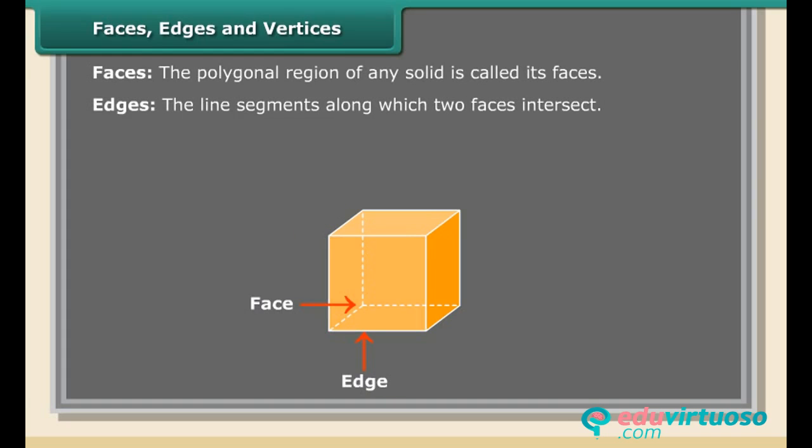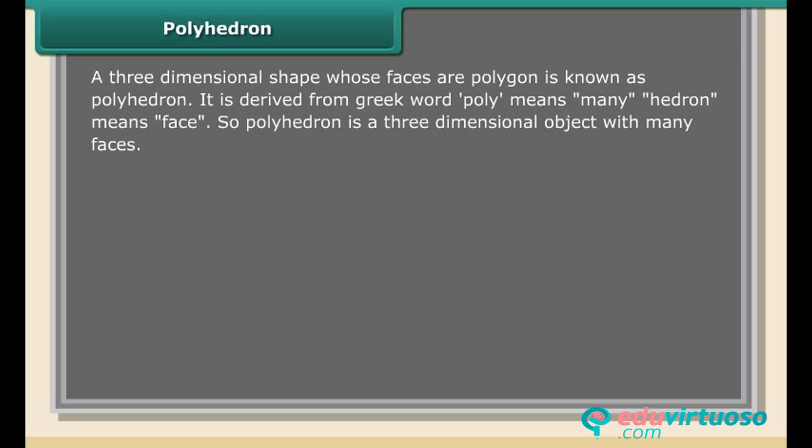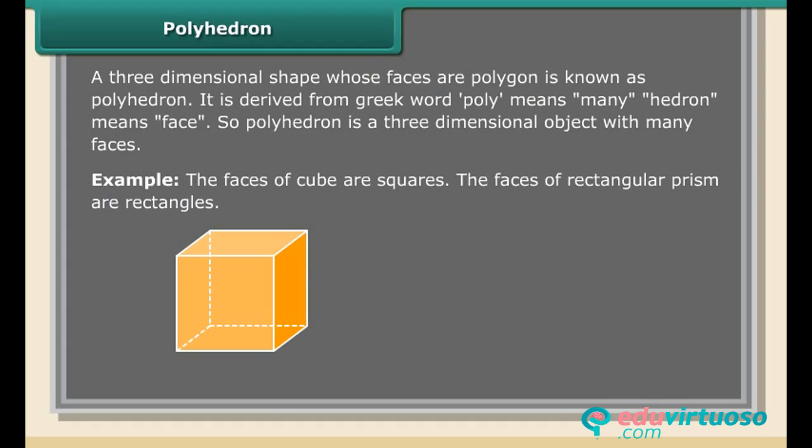Polyhedron: A three-dimensional shape whose faces are polygons is known as a polyhedron. It is derived from the Greek word poly, meaning many, and hedron, meaning face. So polyhedron is a three-dimensional object with many faces. Example: The faces of a cube are squares. The faces of a rectangular prism are rectangles.